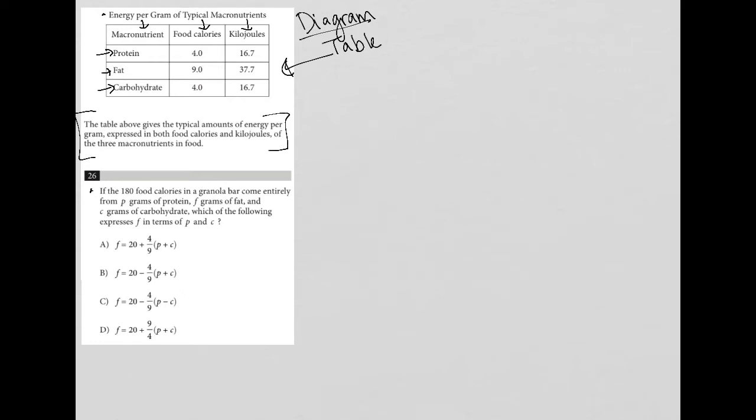So this is definitely what I like to call a translate word problem. All right, we're told that the granola bar has 180 calories. So I'm going to put that here, but I'm going to really say that's the right-hand side of my equation. How do we get to the 180 calories?